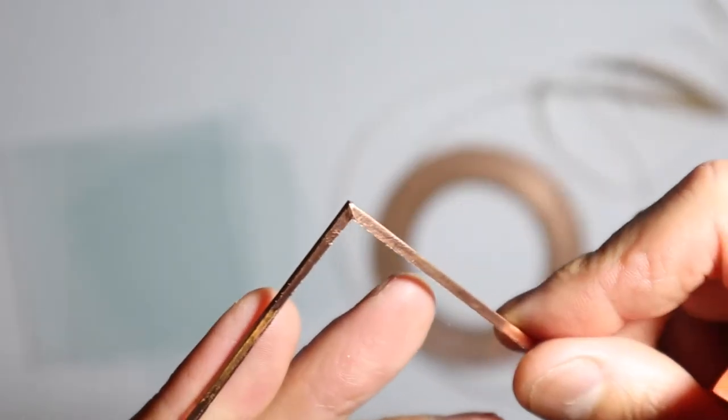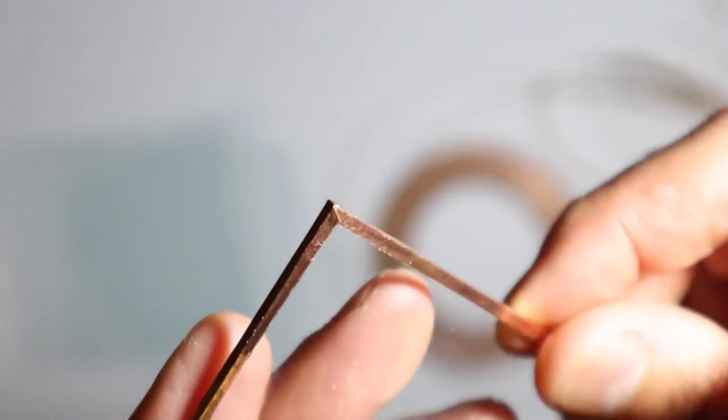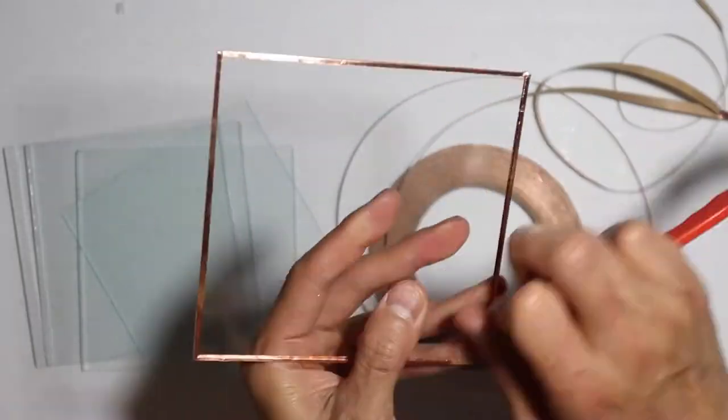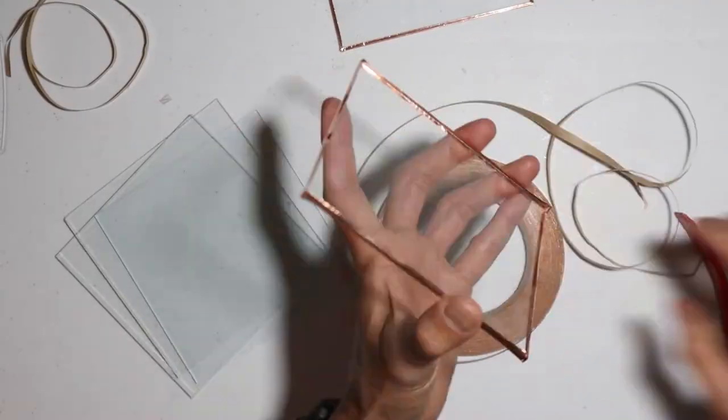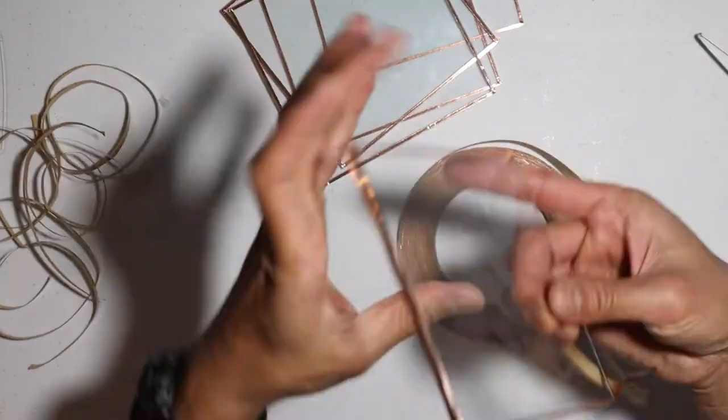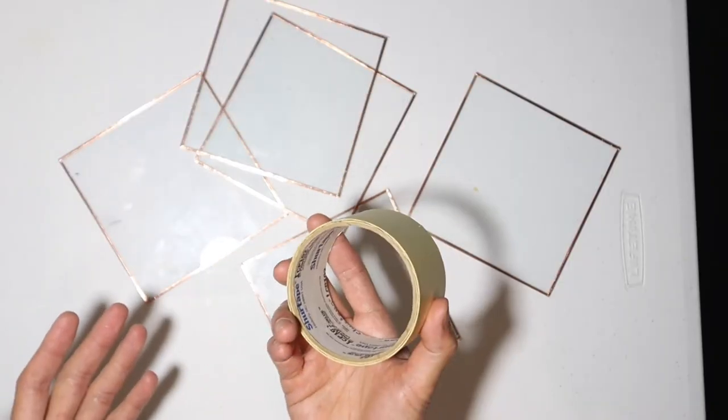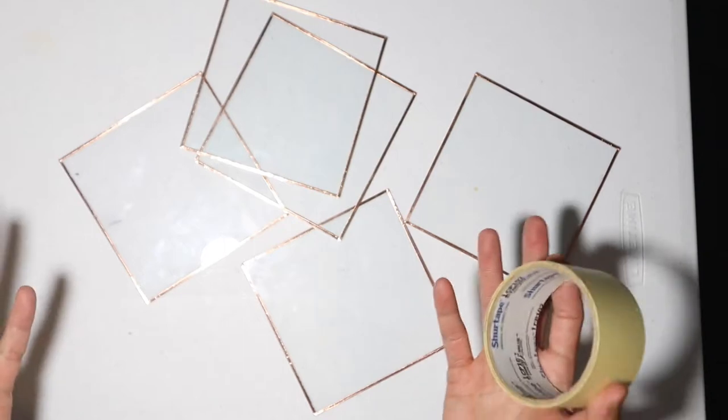Just fold the corners in to overlap it. Alright so we got our squares done so let's use some tape to hold them up into a 3D cube form.